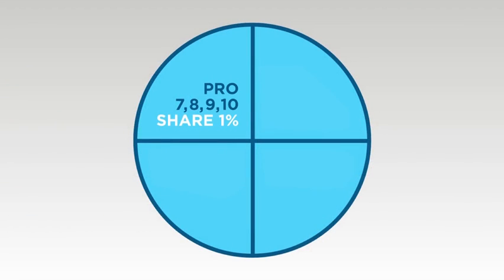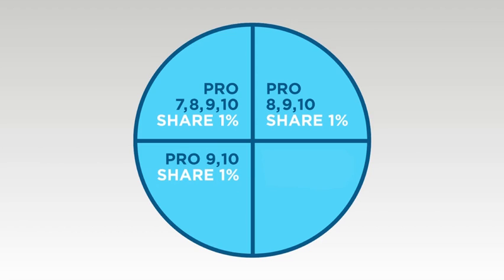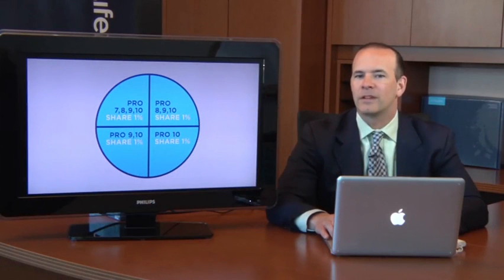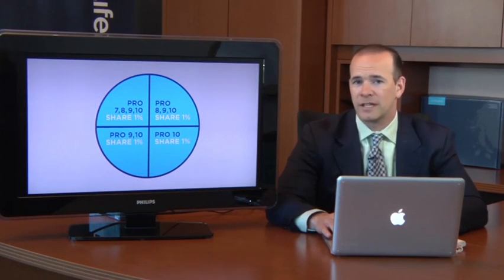We pay 1% to the Pro 7s through 10s, another percent to the 8s through 10s, and a third percent to the 9s and 10s, and one full percent point of total global product sales is paid to the Master Pro 10s. So as you can see, this is a great way for you to begin earning life-changing income.